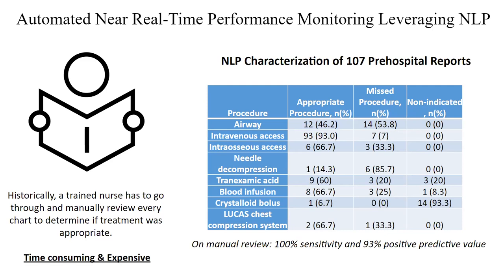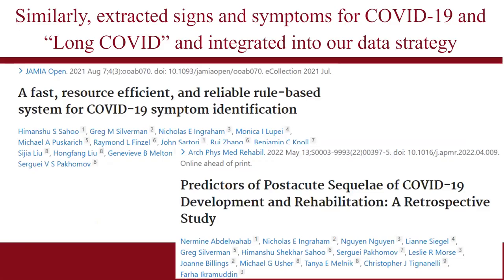NLP features from unstructured notes become features that can be added into your database. For each patient, you can have structured fields like 'did they get an appropriate airway' or 'appropriate IV.' You can link the actual patient record to the note, and pull elements from notes into your database in a structured way. We've done this with COVID as well — COVID pipelines that can read notes within 24 hours of completion and extract concepts such as whether a patient had diarrhea, shortness of breath, or difficulty breathing.